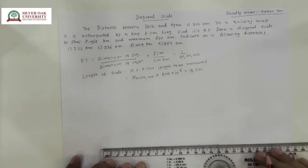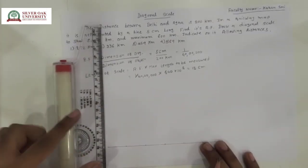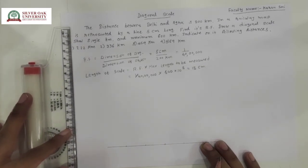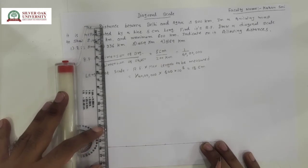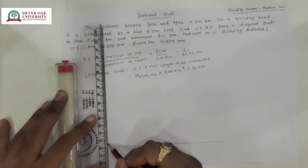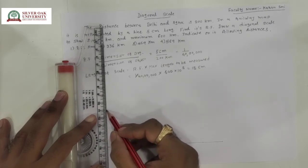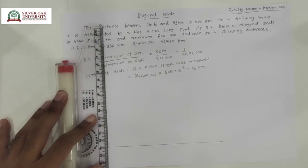So these are 6 equal parts. To make this 15 cm length look like a scale, we have to take a vertical dimension. We can take any dimension; for a proper scale, let's take the vertical dimension with each division equal to 0.5 mm. We can divide it into 10 equal parts, so the total height is 5 cm divided into 10 equal parts.